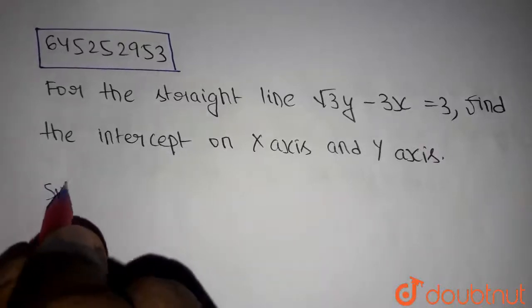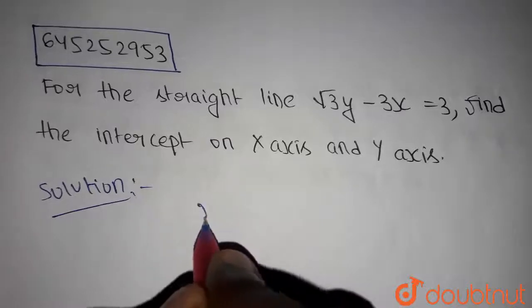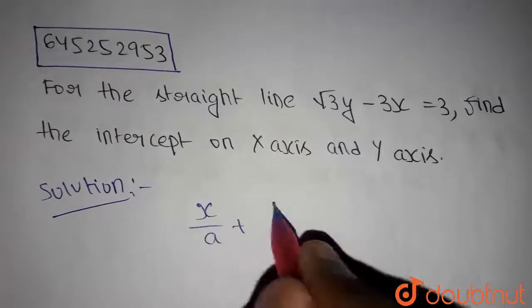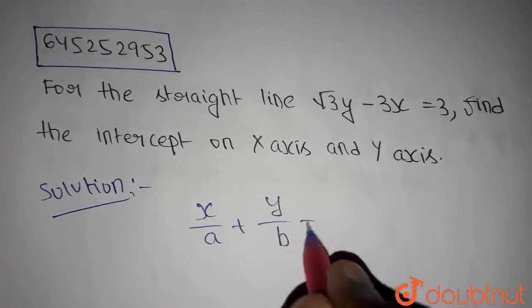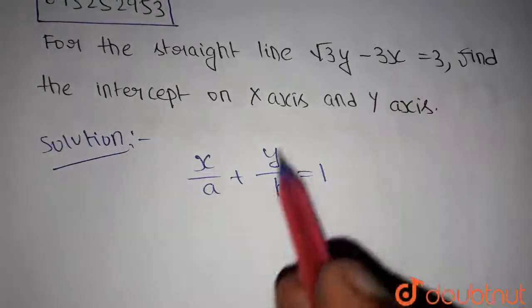Let's get into the solution. The intercept form of a line is x by a plus y by b equals 1. So now let's convert this line into this form.